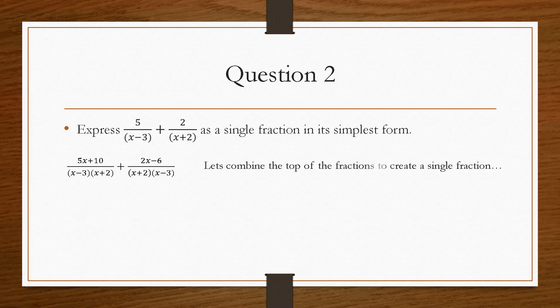So then what we can do after here is combine the top of the fraction, because that will allow us to condense it into a single fraction. Now we don't add the denominators, because these are exactly the same. So all we do is add the top of the fraction. So we get 5x plus 10 plus 2x minus 6, and all of that is divided by x minus 3, x plus 2.